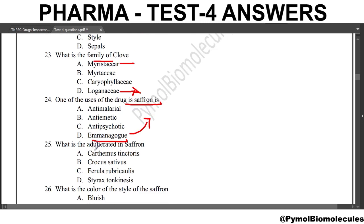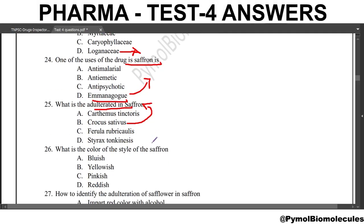Next question: what is the adulterant in saffron? The adulterant of saffron is Carthamus tinctorius. Crocus sativus is the biological source of saffron. Next question: what is the color of the style of saffron? The answer is yellowish color.